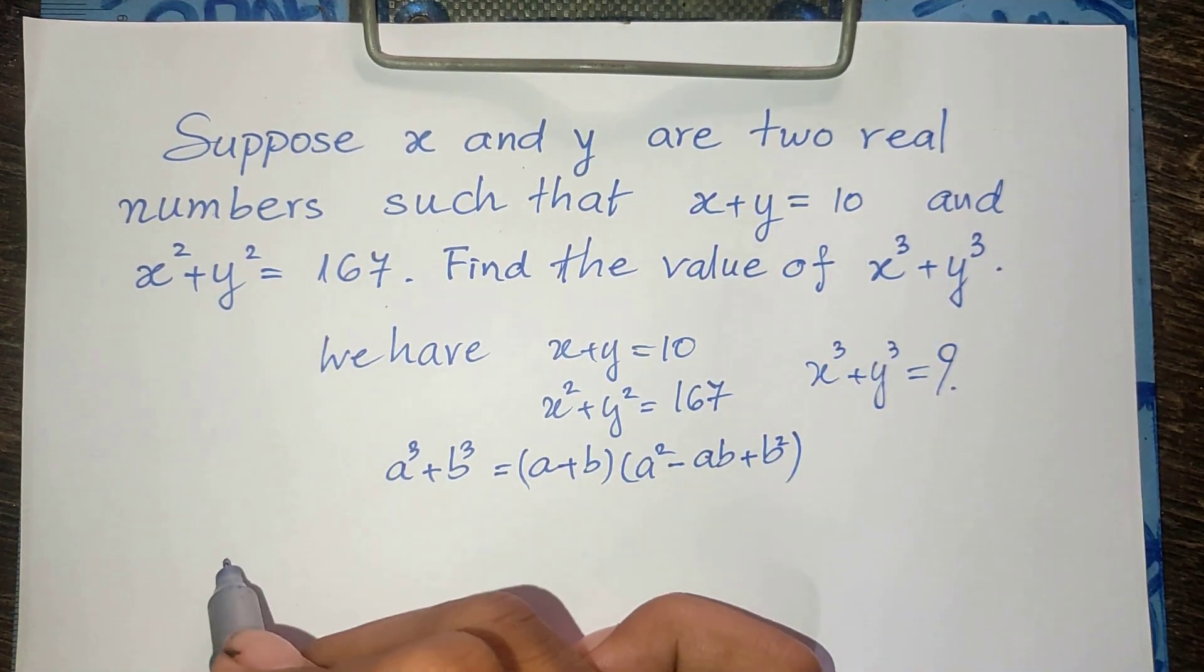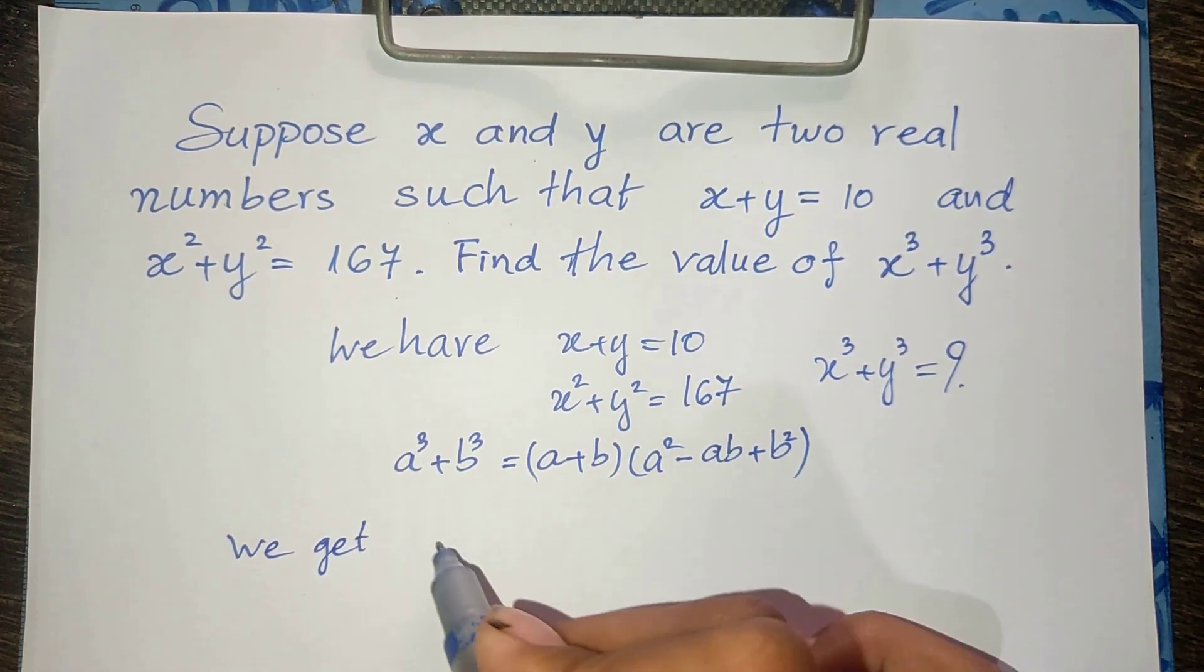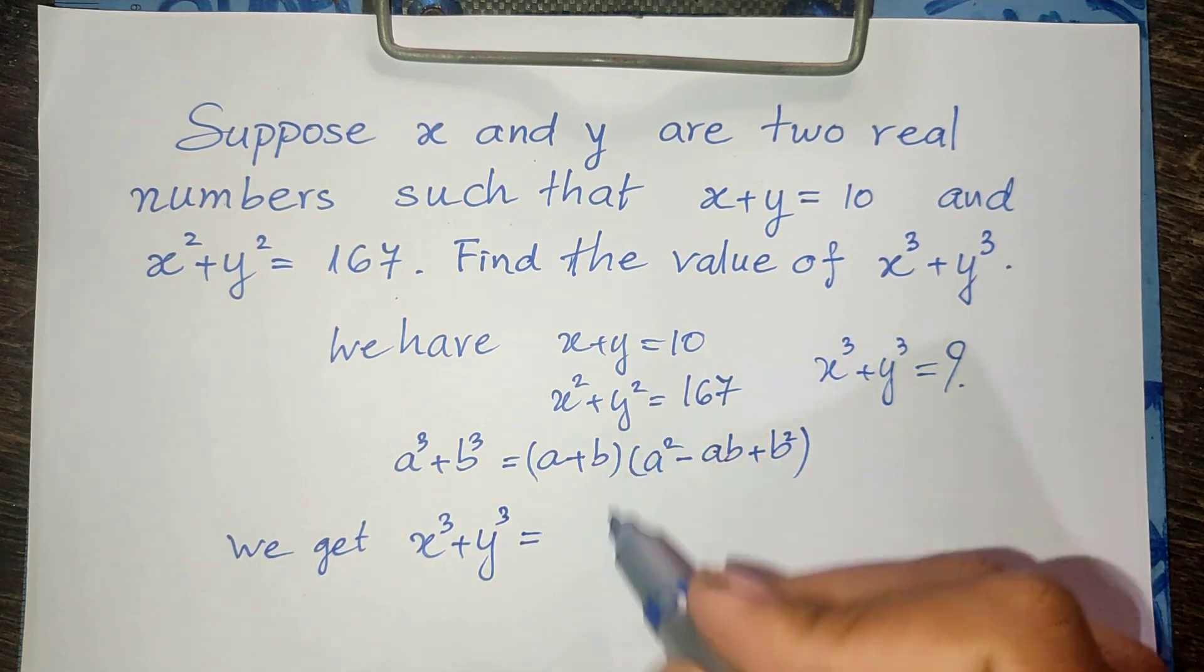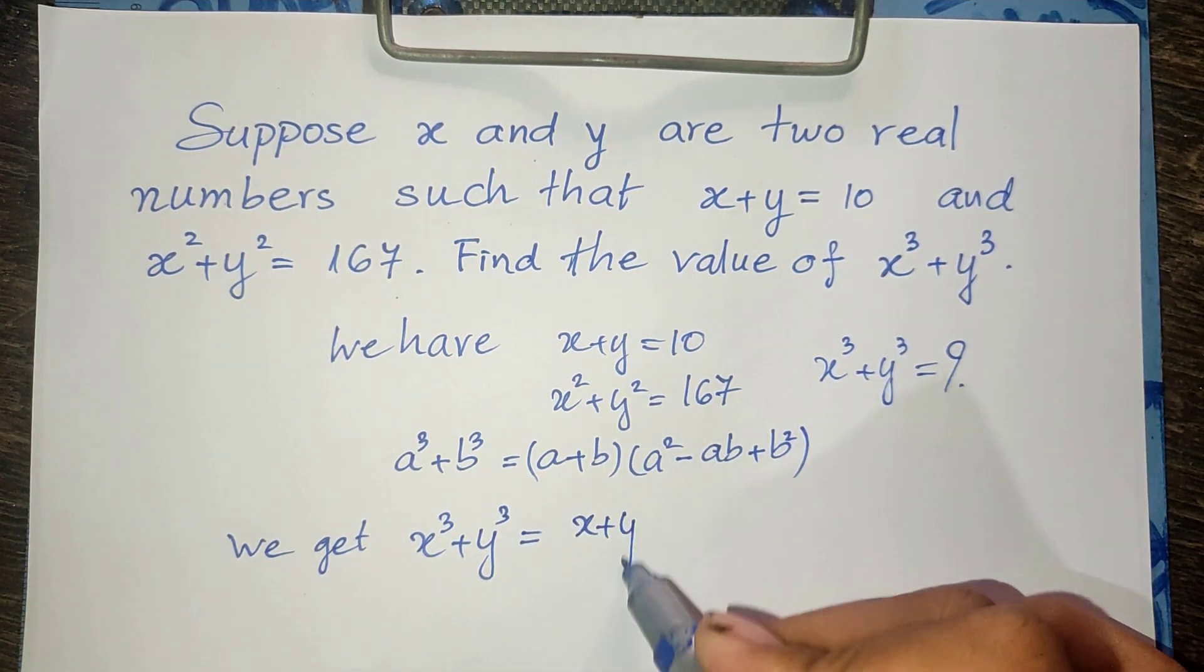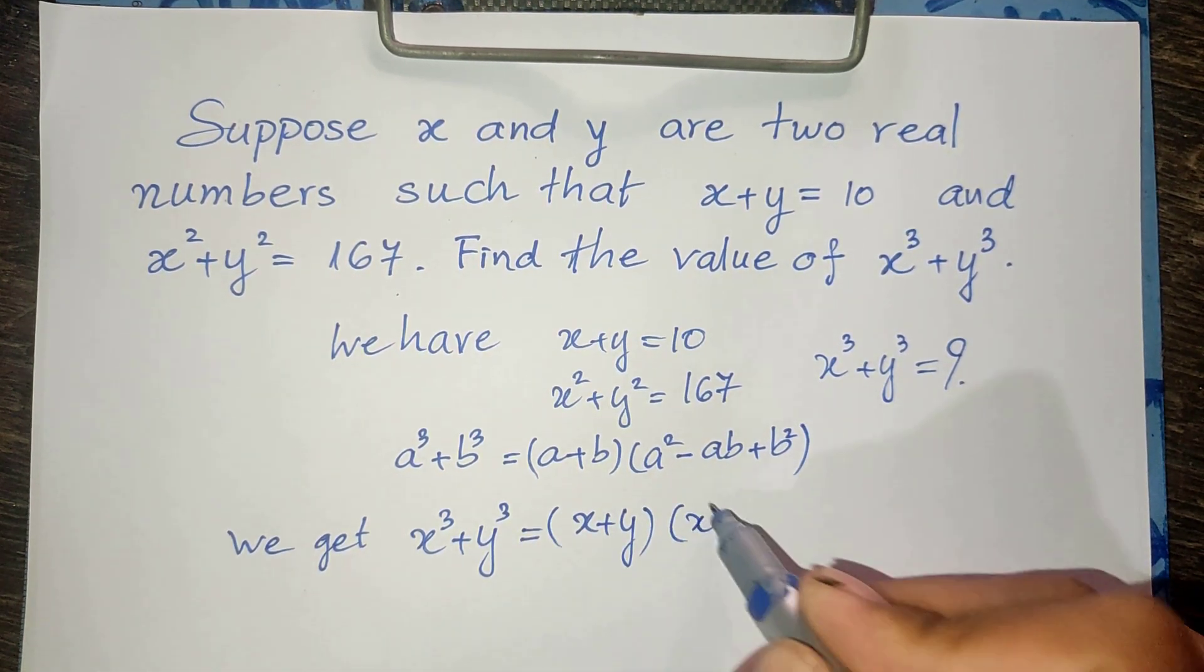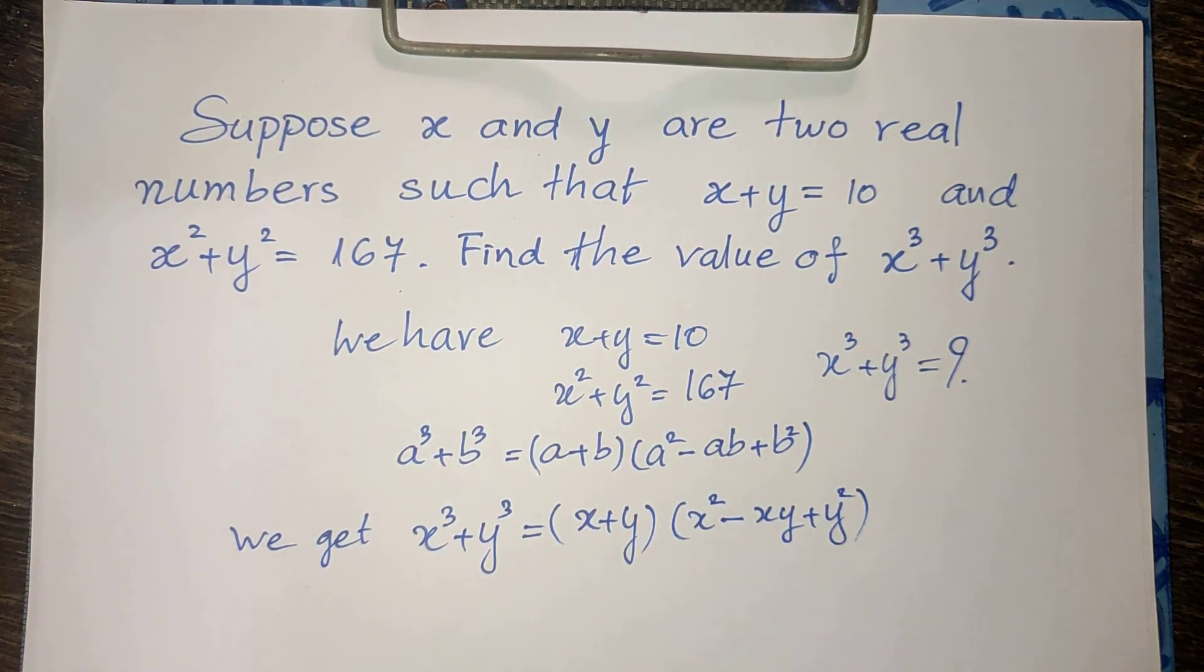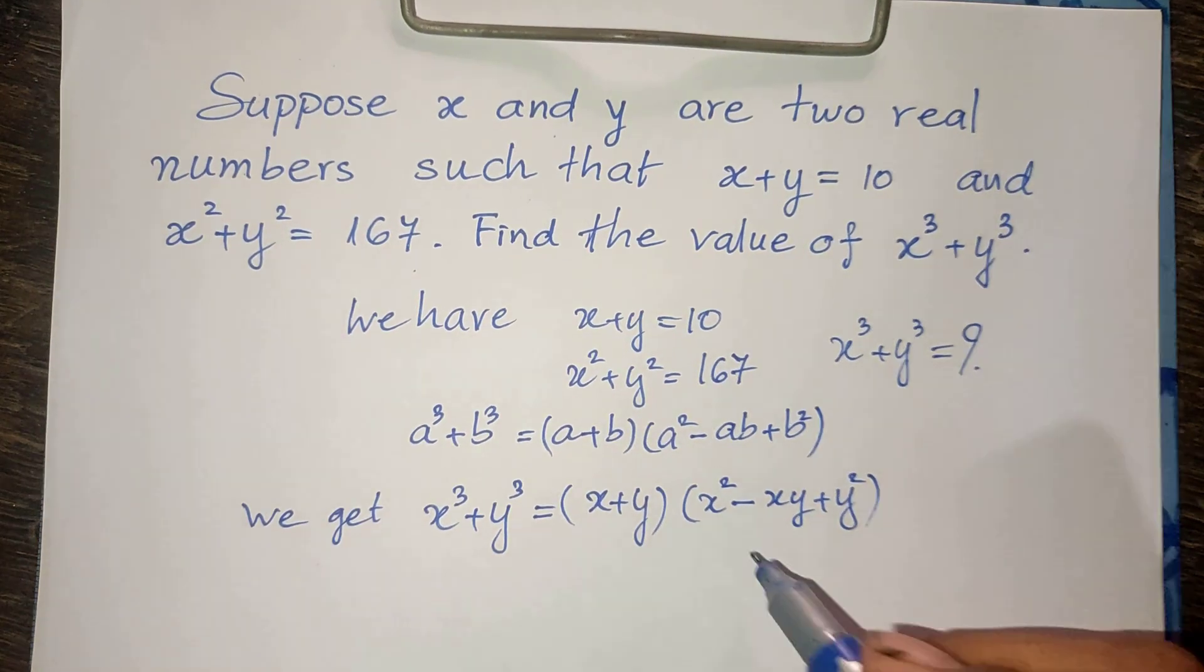You get x power 3 plus y power 3 equals x plus y, and multiply x squared minus xy plus y squared.